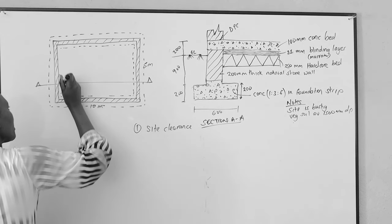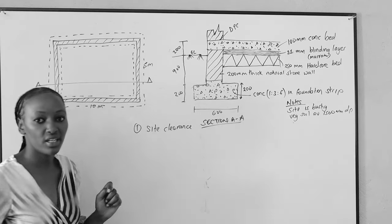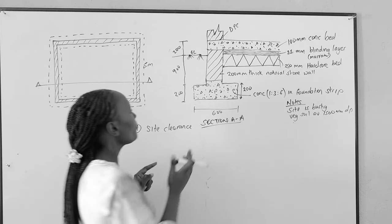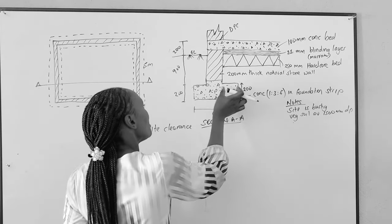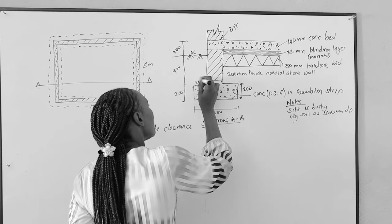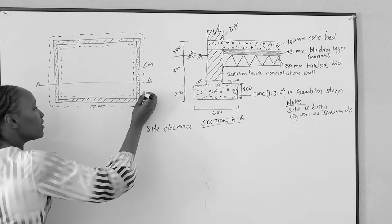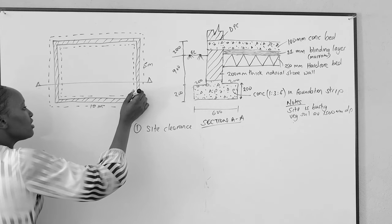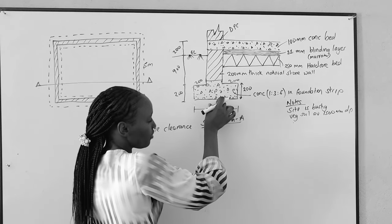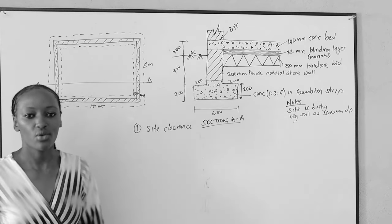This concrete is shown to be 600 millimeters wide and the wall is 200 millimeters. So the thickness outside the wall on each side is 600 minus 200 divided by 2, giving 200mm on each side. This is called the foundation spread — the foundation spreads 200mm on the inside and 200mm on the outside of the wall.